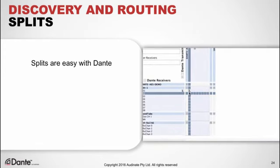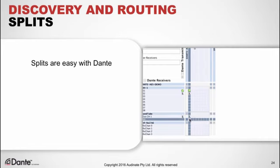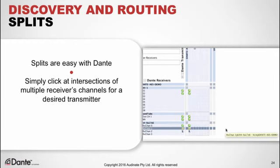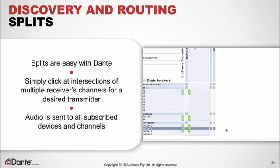Splits are easy with Dante, but were often really vexing on earlier systems that required complex setup and caused ground loop problems. All we do is click the intersections of the desired transmitter channels and any multiple receiver channels — no special hardware or settings required. The transmitter audio is simply sent to all receiver subscriptions. When splitting audio to more than three receiving devices, Dante Controller will present a fan-out message indicating that multicast use is recommended for optimal network efficiency.